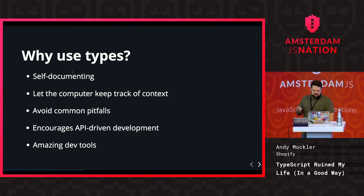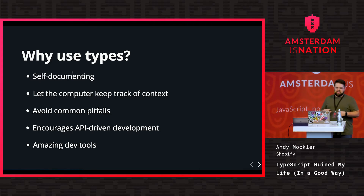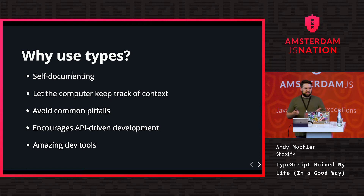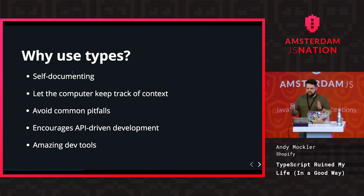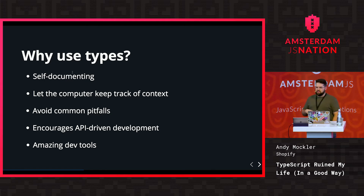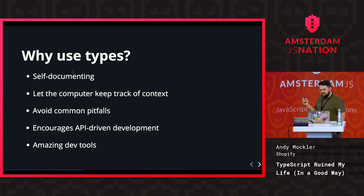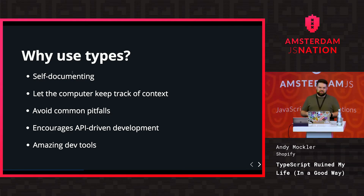It also encourages API-driven development, meaning you really focus on your API as you go. In JavaScript it's easy to just push through an options hash and slowly add things until you're passing 15 or 20 options without having it well documented. With TypeScript you have to be explicit about what's on that options object, so it helps you pay attention to your API and how your code interfaces with other parts of your application. And finally, there are some really amazing development tools — the dev tools for TypeScript right now are really awesome.